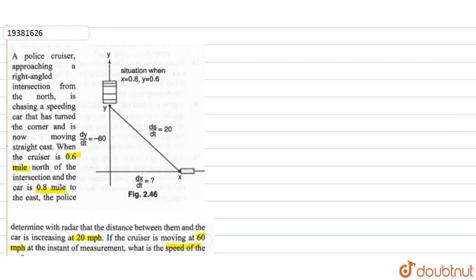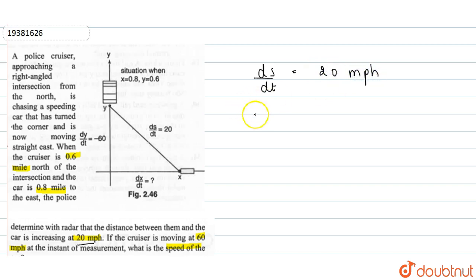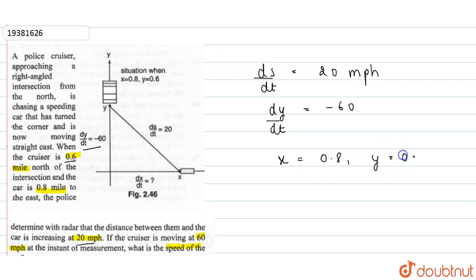So, what is given? ds/dt is given as 20 miles per hour. dy/dt is given as minus 60. And we have given that x is 0.8 and y is equal to 0.6. We need to calculate dx/dt.